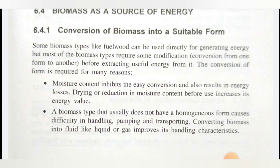Some biomass types like fuel wood can be used directly for generating energy — we directly burn that wood fuel, boil water, and derive mechanical or electrical energy. However, for some biomass types, we cannot directly derive the energy into a useful form, so we have to do some conversion processes. Most biomass types require some modification — conversion from one form to another — before extracting the useful energy from it.